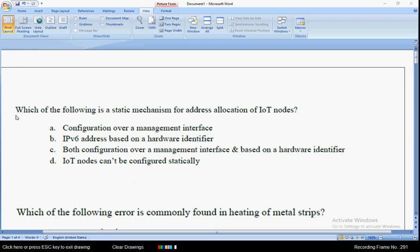First question: which of the following is a static mechanism for address allocation of IoT nodes? The answer for the first question is option C. Friends, all these are probable answers I have checked many times, but most of the answers are correct to my knowledge. If you have any doubts or any clarifications, please comment in the comment section so I will try to reply to those queries.